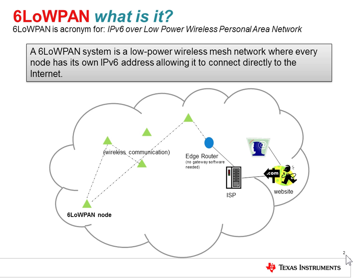So what is 6LowPAN? 6LowPAN stands for IPv6 over low-power wireless personal area network. The principal idea with the 6LowPAN standard is that Internet protocol packets can be carried efficiently within small link layer frames. This means that 6LowPAN should be used with low-power wireless networks with memory-constrained embedded devices.